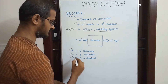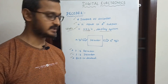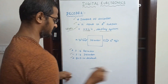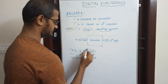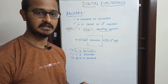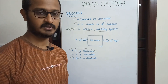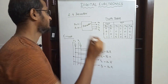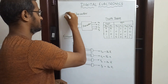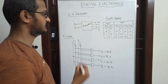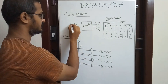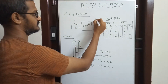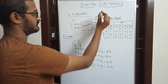Decoder types: 3-to-8, and BCD-to-decimal. We will discuss the 2-to-4 decoder in detail. In a 2-to-4 decoder, there are two inputs and four outputs — following the rule of n inputs to 2 to the power of n outputs. Here is the logic diagram showing the two inputs and four outputs.